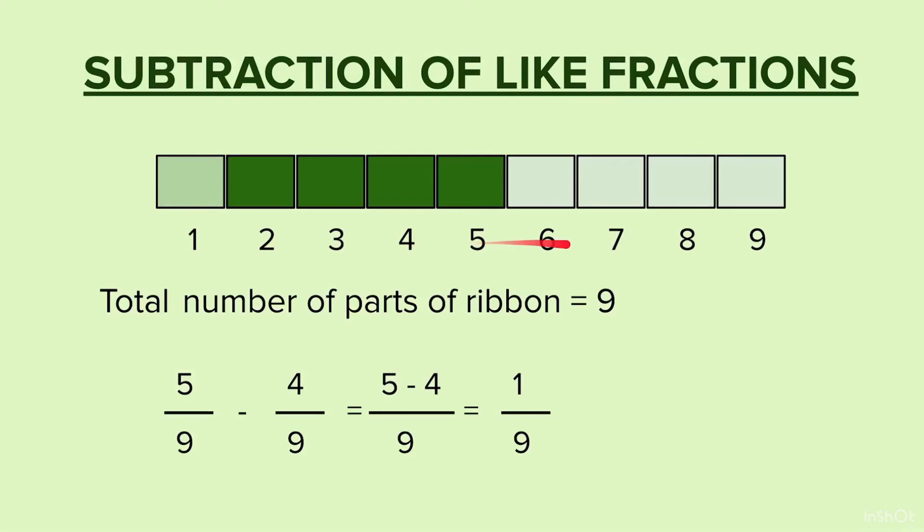In this example, when we have taken a 5 by 9 fraction, and we have given 4 by 9 to our sister, then we have 1 by 9 portion left. And this is how to write this.